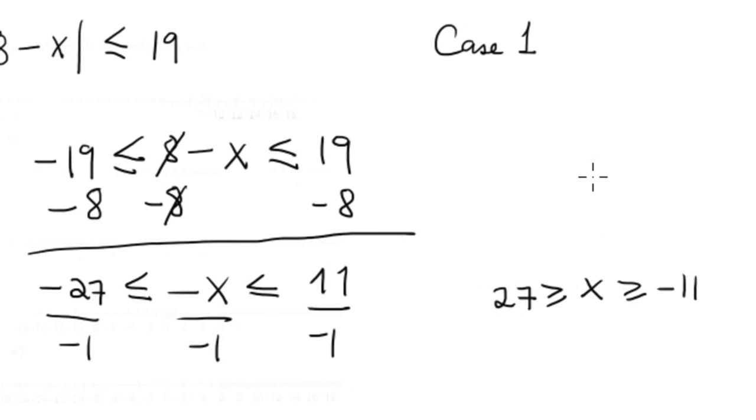Much better you write it like negative 11 is less than or equal to x, which is less than or equal to 27, switching the order.